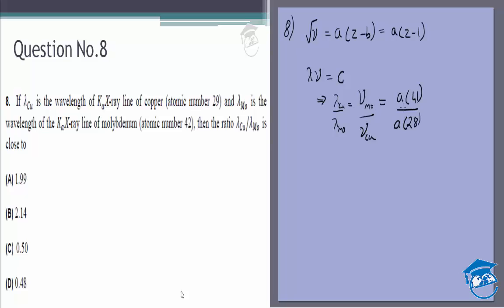So 42 minus 1 is 41 divided by A times 29 minus 1 is 28, right? And this would be squared because root mu is equal to A into Z minus 1.